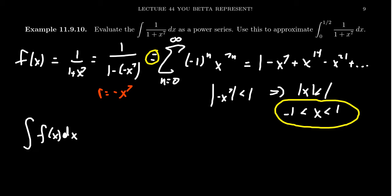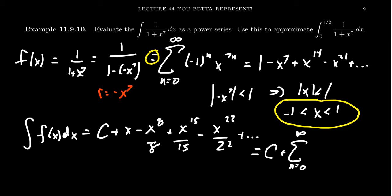The power series antiderivative would look like c plus x minus x to the eight over eight plus x to the 15th over 15 minus x to the 22nd over 22, and this continues on and on. If we want a closed formula for this, we could get something like c plus the sum, we're going to go from n equals zero to infinity. It's an alternating sum, so we're going to get negative one to the n, we're going to get x to the seven n plus one, all over seven n plus one. We could do something like that, we don't necessarily need this closed formula at this moment.